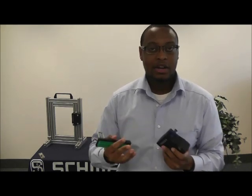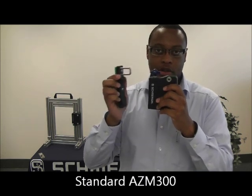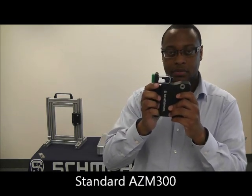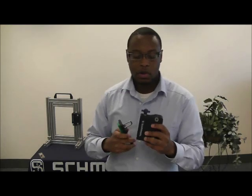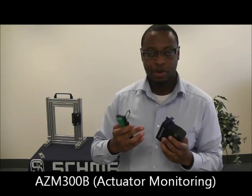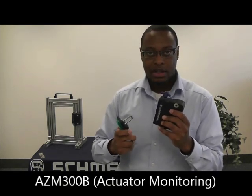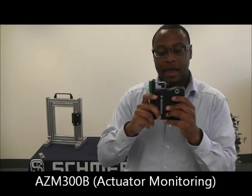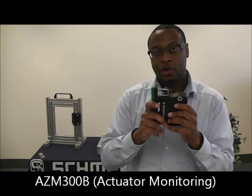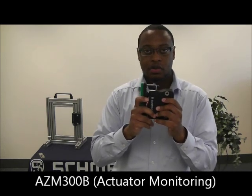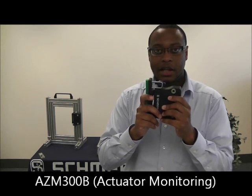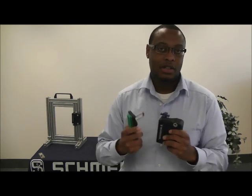Some of the options for the AZM300 include the standard version where the AZM300 is looking for the door to be closed and not locked signal before you get your safety outputs, and we offer that with the power to lock and the power to unlock. We also have the B variant, with the AZM300B, where the AZM300 is looking for the door to be closed and that it can be locked, so it's not looking for the lock signal before you have your safety outputs. As long as the door is closed and there aren't any faults and the lock signal can be delivered, you will have 24 volts delivered at your output, and that's more for the process industry.